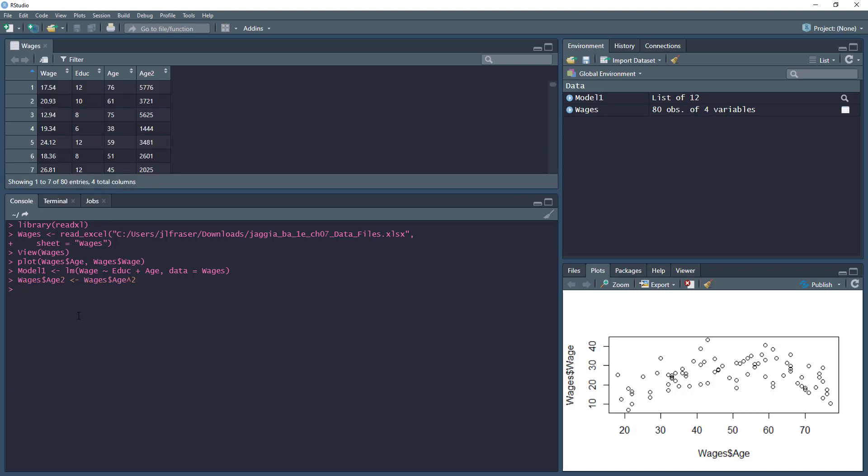Now we have four variables in the wages dataset: wage, education, age, and age2, age2 being age raised to the second power. Now we can add that to our model.